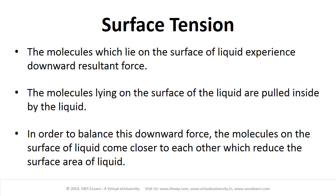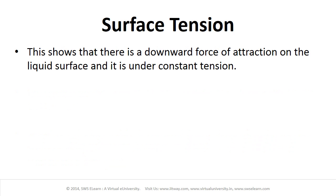In order to balance this downward force, the molecules on the surface of the liquid come closer to each other and consequently reduce the surface area of the liquid. This shows that there is a downward force of attraction on the liquid surface and it is under constant tension.